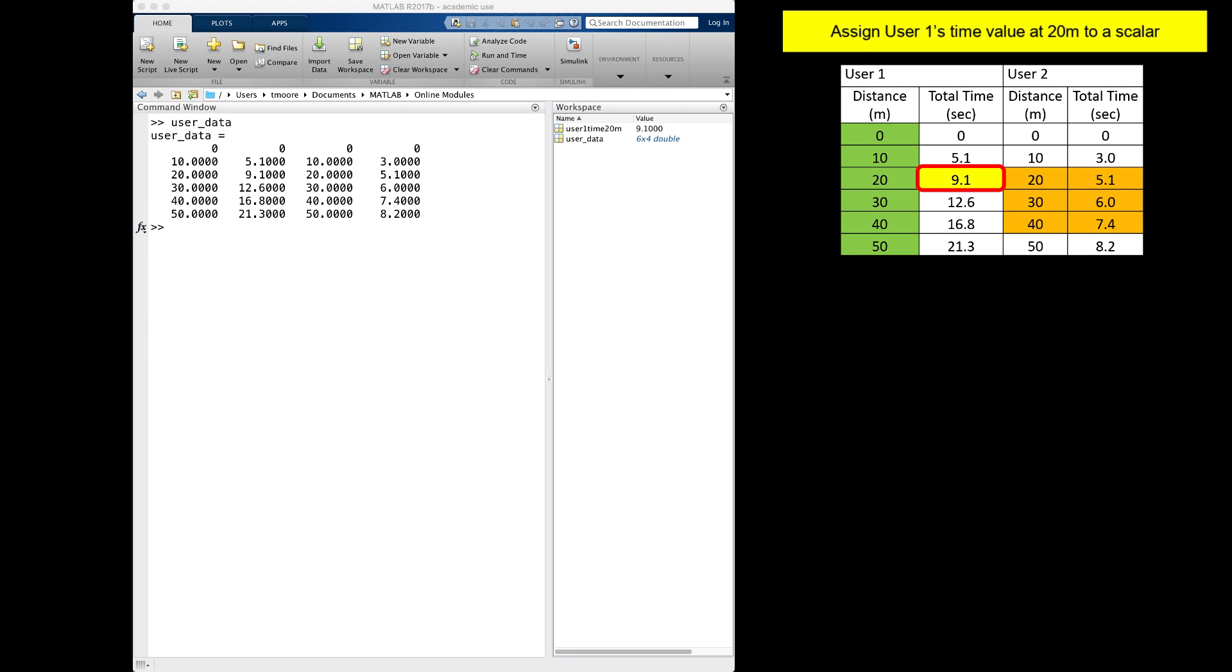What happens if you reverse the order around the equal sign when creating variables? I will clear my user1time20m variable and try this again, but in the other order. I will start by using array indexing for the third row, second column, then set that equal to my variable name user1time20m. This gives me an error.